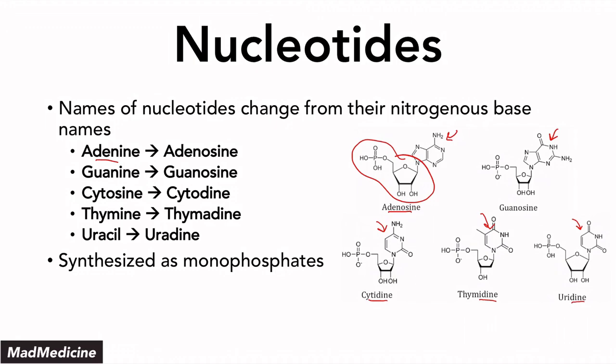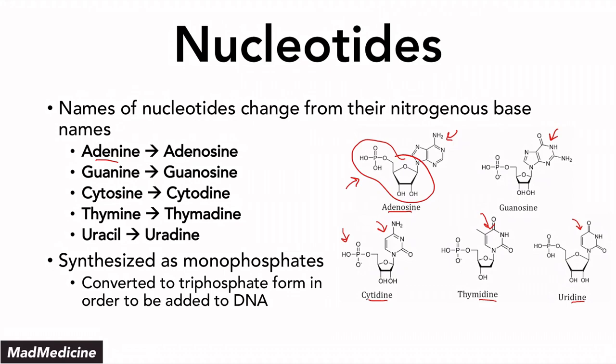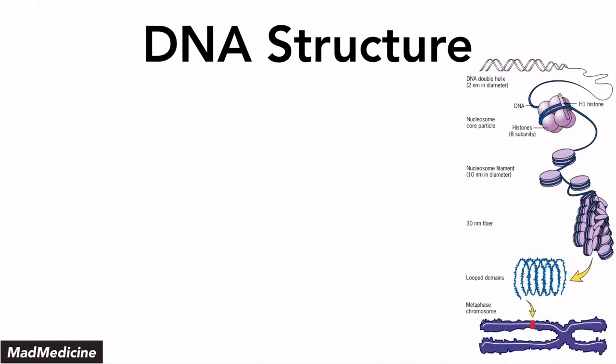These are all synthesized as monophosphates — one phosphate group — but you can attach multiple phosphates to create energy. For example, adenosine monophosphate (AMP) can have two more phosphates added to go from AMP to ATP. These nucleotides can be converted to triphosphate forms in order to be added to DNA.